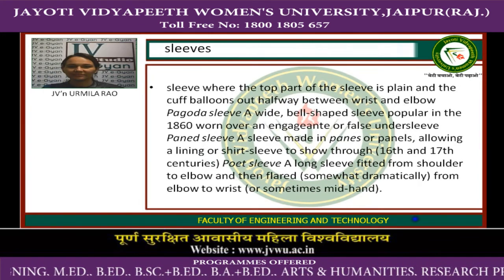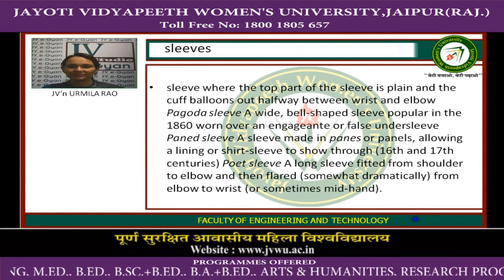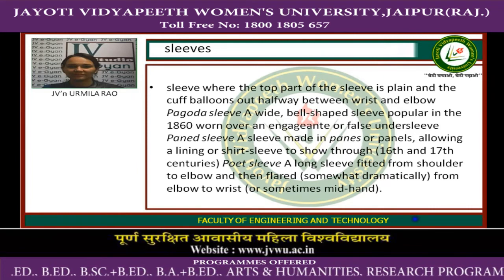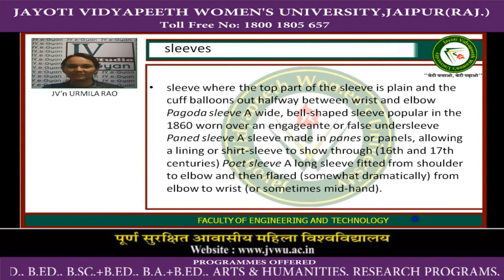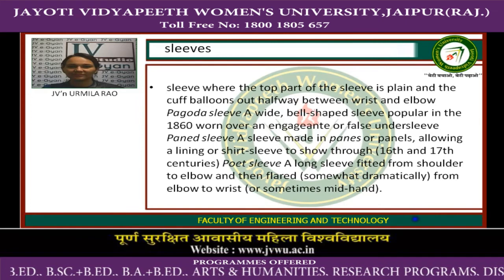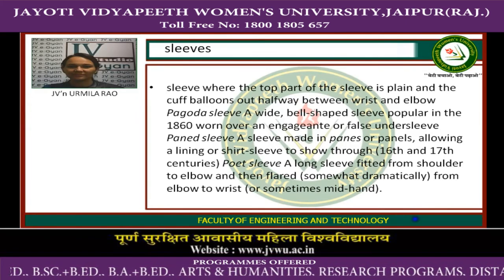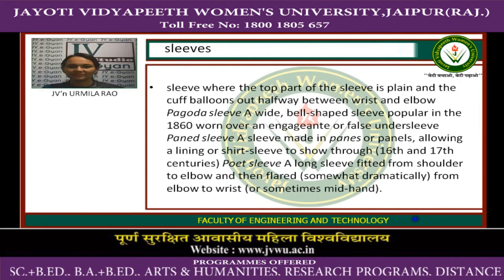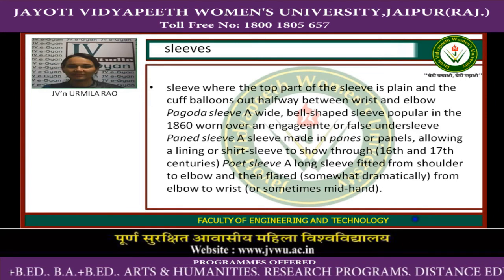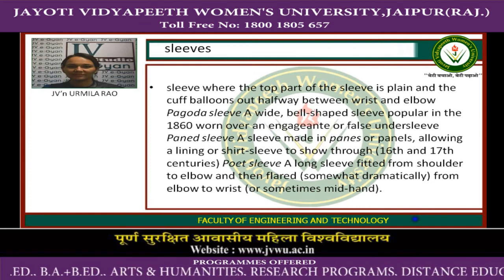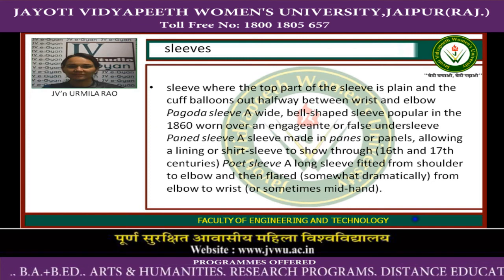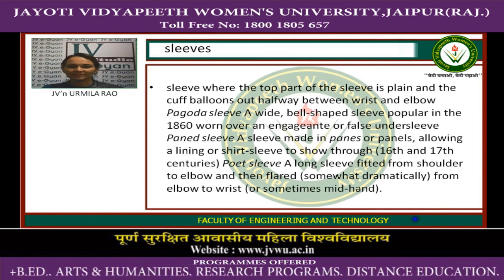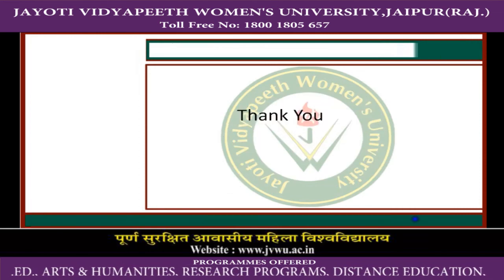A sleeve where the top part is plain and the cuff is full and falls halfway between the wrist and elbow. Pagoda sleeve: a wide bell-shaped sleeve popular in the 1860s, worn over an engageante or false undersleeve. It can also refer to a sleeve made in panels allowing a lining or short sleeve to show through, common in 16th and 17th century fashion. Poet sleeve: a long sleeve fitted from shoulder to elbow and then flared from elbow to wrist or sometimes mid-hand.